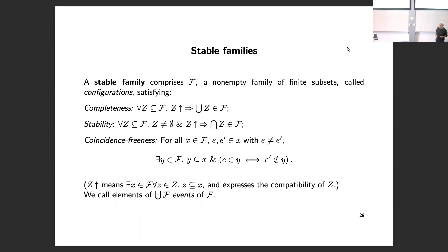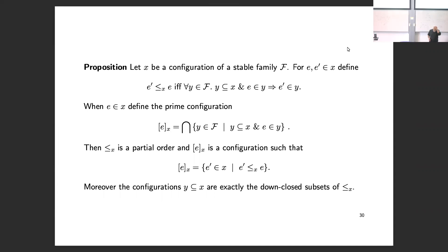The key point of this generality is that you've gone more general but not that much more general. We'll be able to recover an event structure from a stable family. First, let's note some local versions of global properties. If you have a configuration X, you can put an order on its events: e-prime is below e in X if any sub-configuration of X which contains e also contains e-prime.